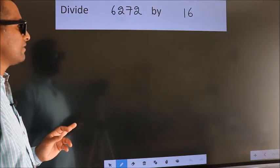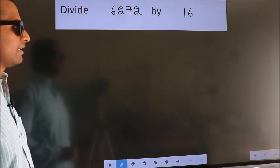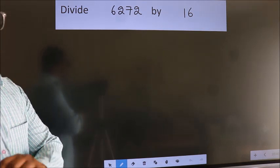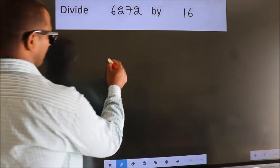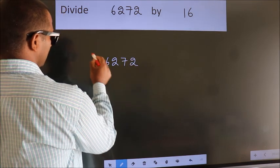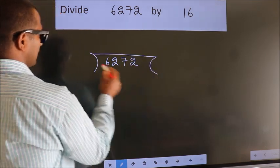Divide 6272 by 16. To do this division, we should frame it in this way. 6272 here, 16 here.